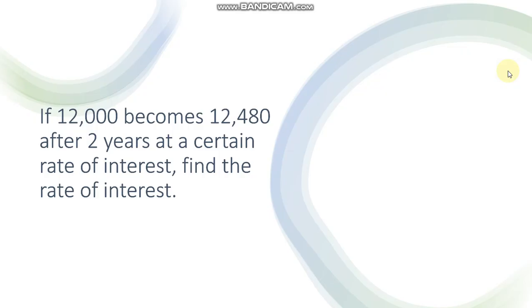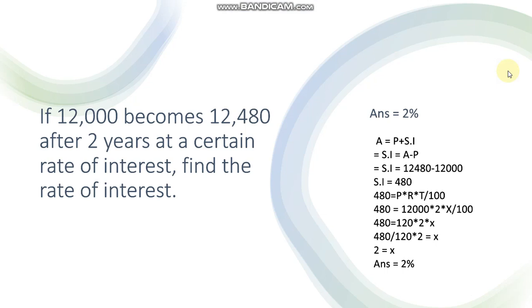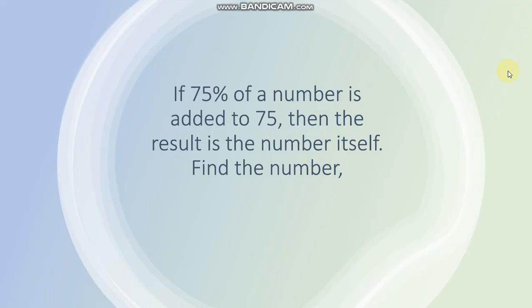Next is if 12,000 becomes 12,480 after 2 years at a certain rate of interest, find the rate of interest. Answer is 2 percent. How you will calculate? Amount is equal to principal plus simple interest. Simple interest is equal to amount minus principal. Now simple interest becomes 480. Now you will put the values in the formula of simple interest: P into R into T upon 100 is equal to 480. From this, you will calculate rate is equal to 2 percent.